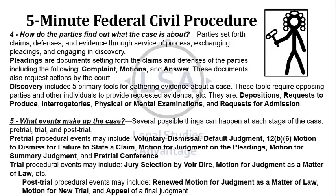What events make up the case? Several possible things can happen at each stage of a case: pre-trial, trial, and post-trial. Pre-trial procedural events may include voluntary dismissal, default judgment, 12(b)(6) motion to dismiss for failure to state a claim, motion for judgment on the pleadings, motion for summary judgment, and pre-trial conferences.